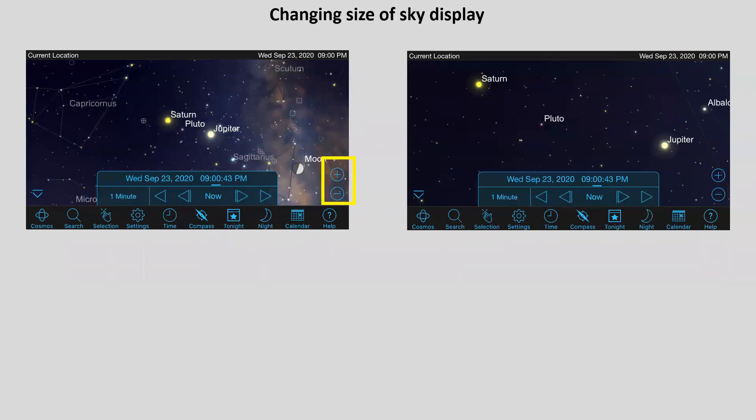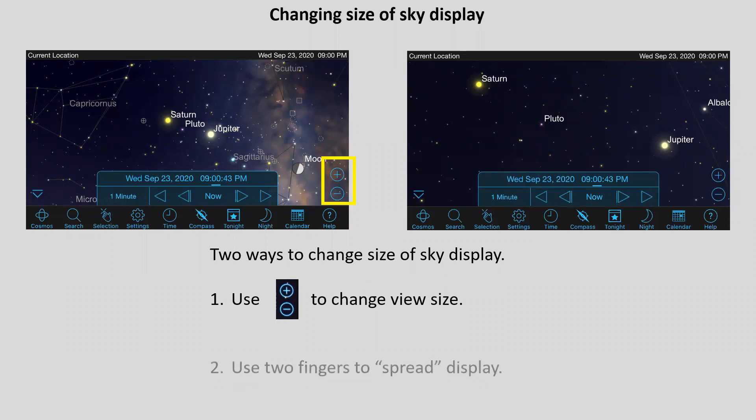You can change the size of the display. If you look on the left, you'll see Saturn and Jupiter close together. Ignore Pluto for a second. Sky Safari shows us that Pluto is there, but you will never see it, but you'll notice that they're pretty close together. Now, I can change the sky display in two different ways. You notice the little buttons plus and minus there in the yellow box. If I push the plus, it gets bigger. If I push the minus, it gets smaller, or as you're probably most familiar with your cell phone, just use two fingers, and you can spread the display. You'll notice that on the right display, Saturn and Jupiter have moved much further apart than they are on the left. So that's how you change the size of the sky display.